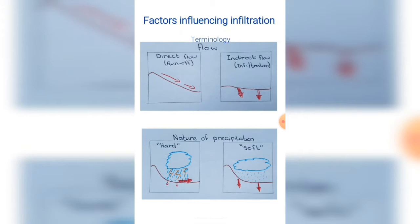The first factor that influences infiltration is the nature of precipitation. If you have hard rain that comes down fast, for example a thunderstorm, there is more likely to be runoff than infiltration. This is because there isn't enough time for the rain to soak into the soil, so therefore more runoff occurs.